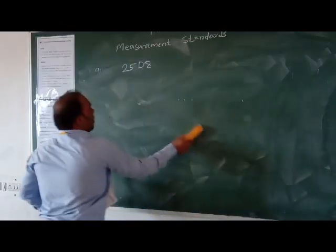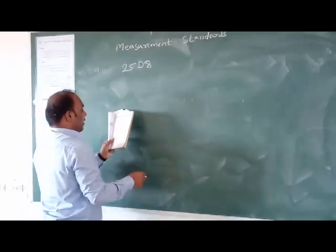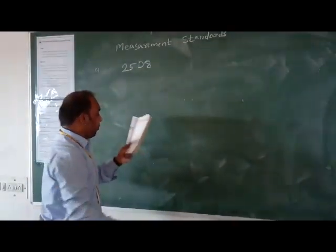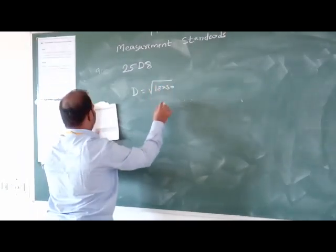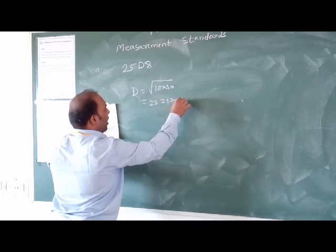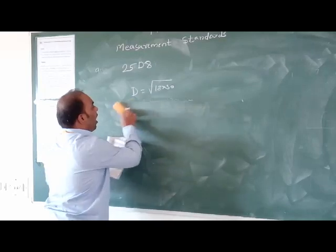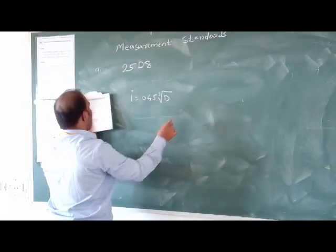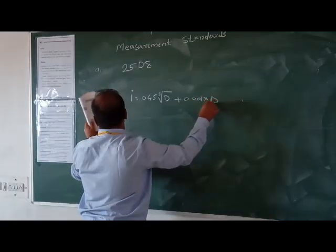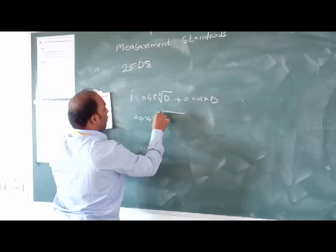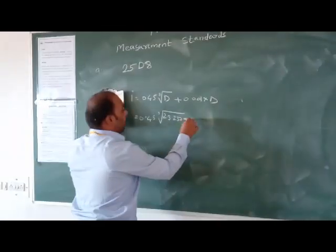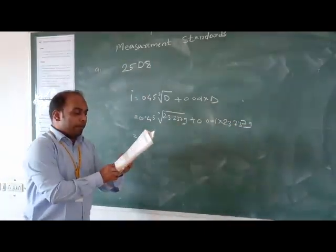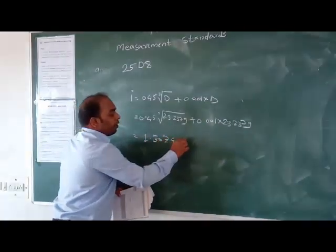Let us first find the dimensions. For 25H8, the grade range is 18 to 30mm. Capital D is calculated as square root of 18 times 30, which equals 23.2379mm. The tolerance unit i is 0.45 times cube root of D plus 0.001 times D, giving us 1.30745 microns.